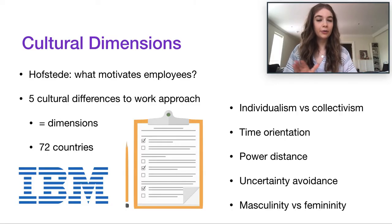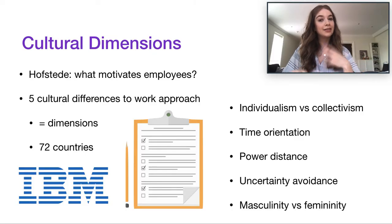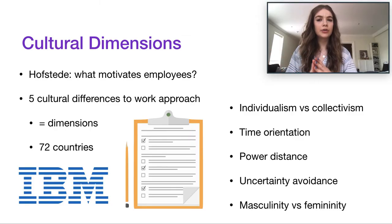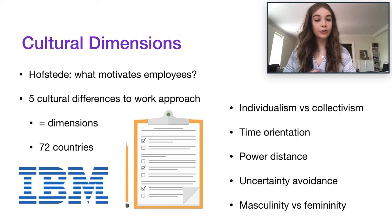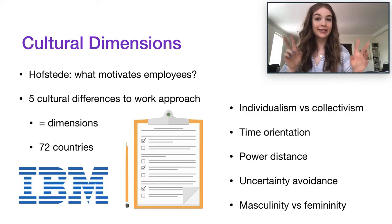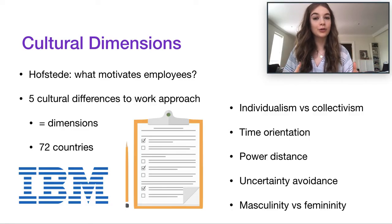Remember, these are all different cultural approaches to work — that's what Hofstede was hired to investigate. The final dimension is masculinity versus femininity. Don't read too literally into those labels; it's more about personal achievement versus interpersonal harmony — the stereotypical masculine versus feminine approaches. That's a different cultural variation he found in work approaches.